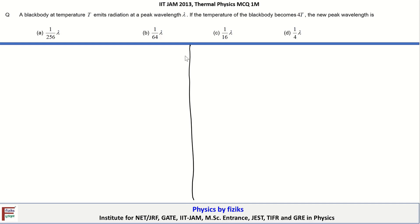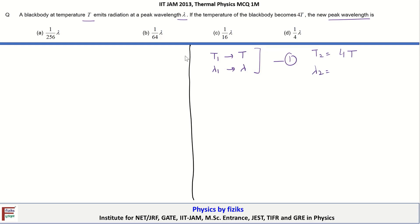The statement is: a black body at temperature T emits radiation at wavelength lambda. So T1 is equal to T and the corresponding emission wavelength is lambda. If the temperature of the black body becomes 4T — we call this T2 — the new peak wavelength is what we have to determine, so we need to find lambda 2.